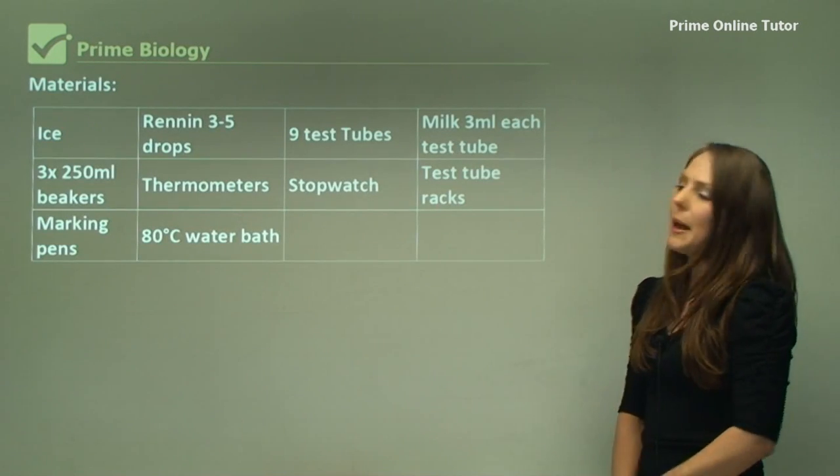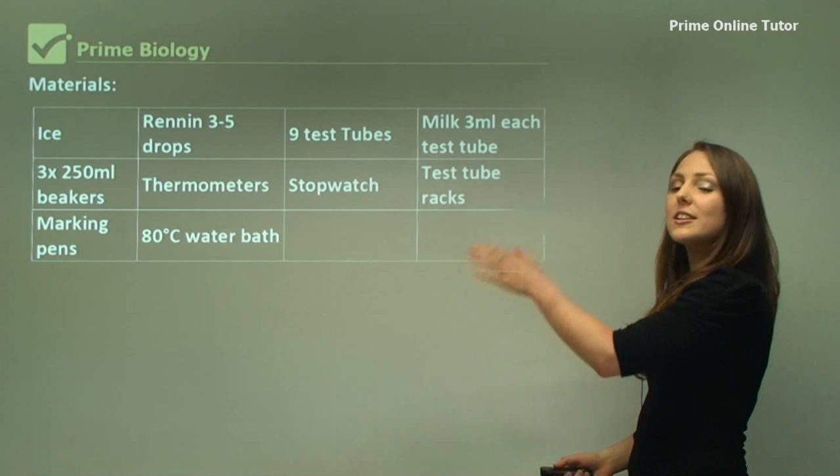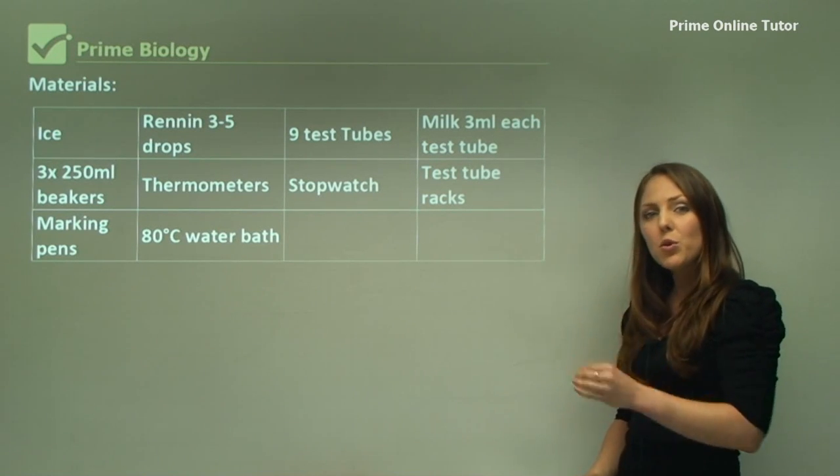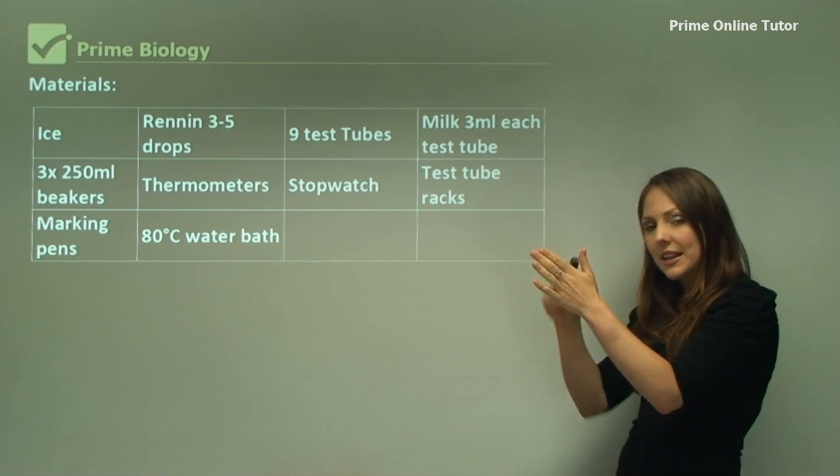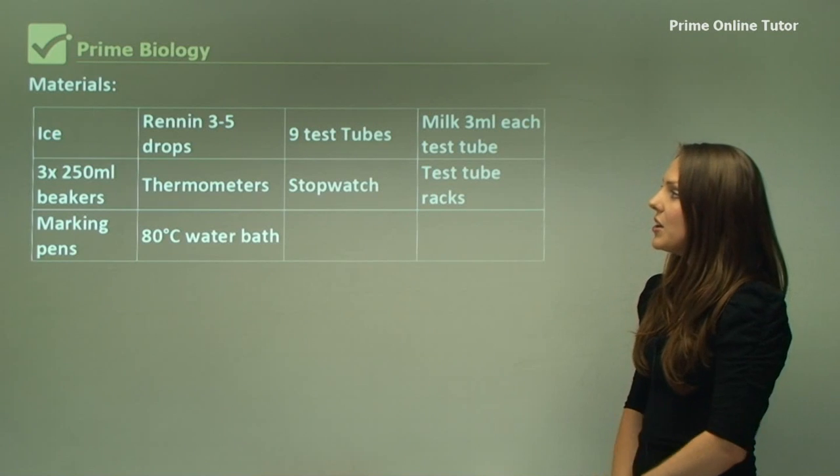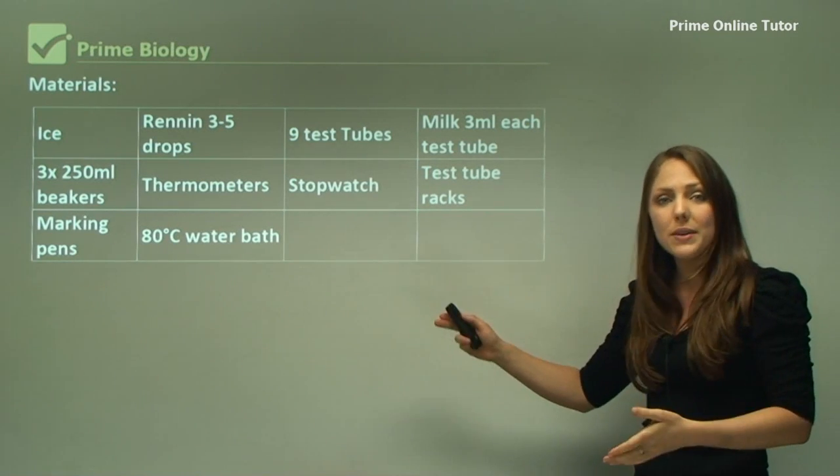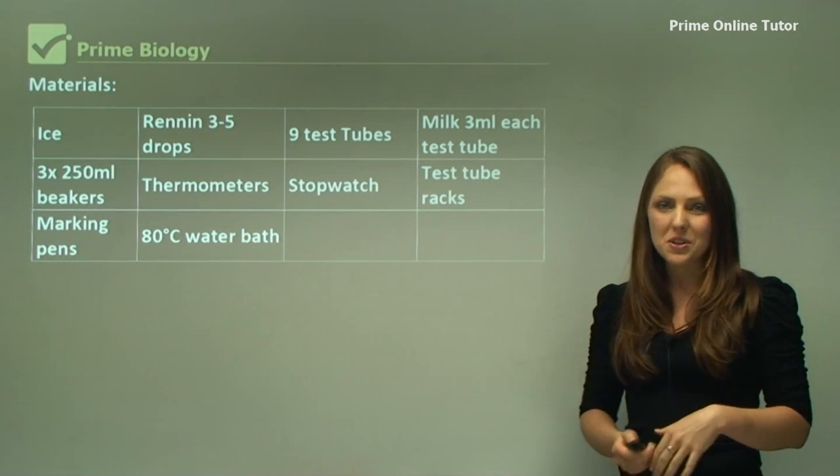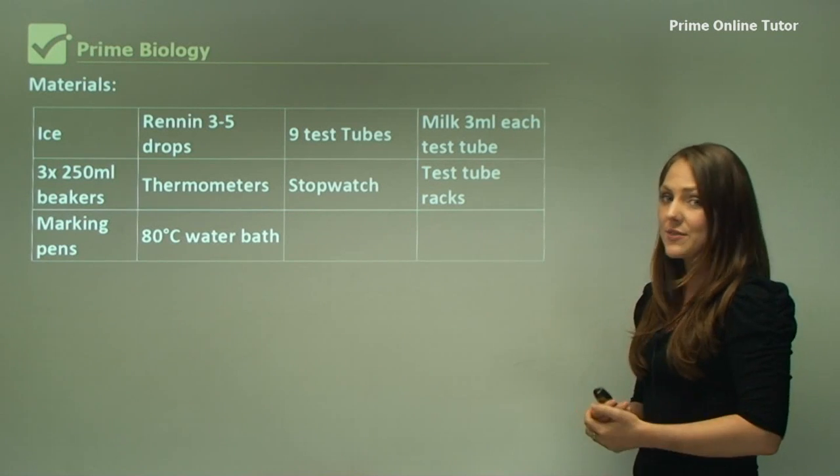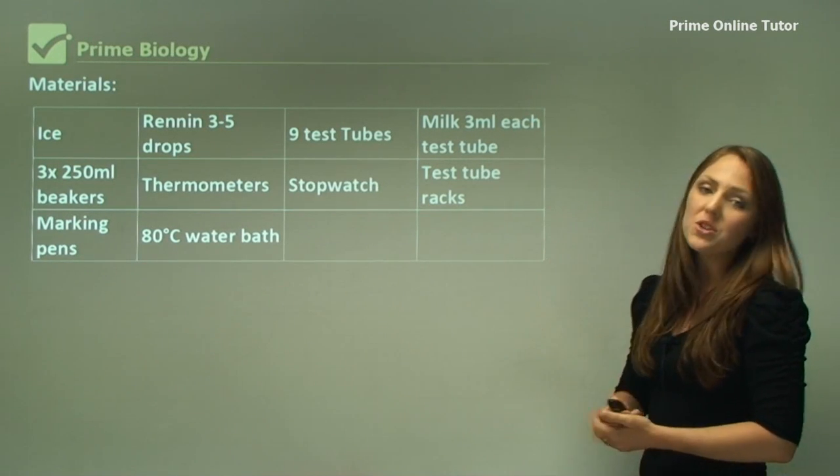Materials: I have got it set out in table form, but you may want to make dot points in your book and list it down your page. We need ice to cool the environment for the enzyme to slow its functioning. We also have rennin, which is that enzyme.